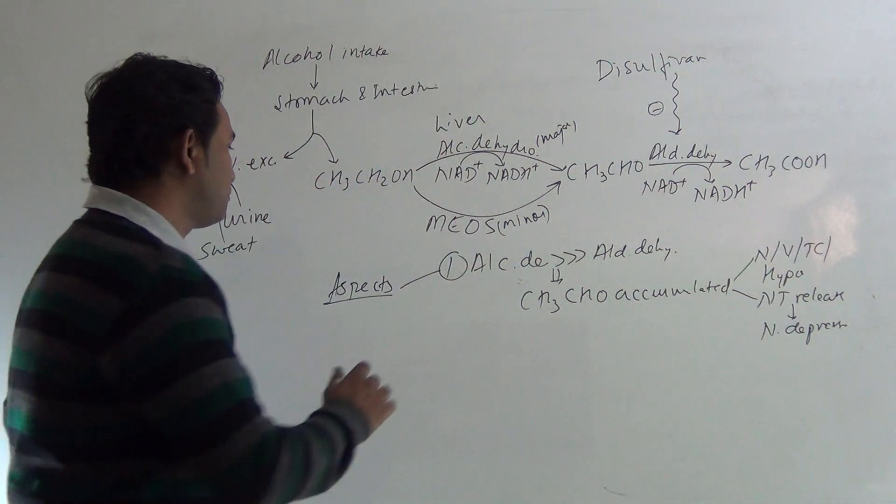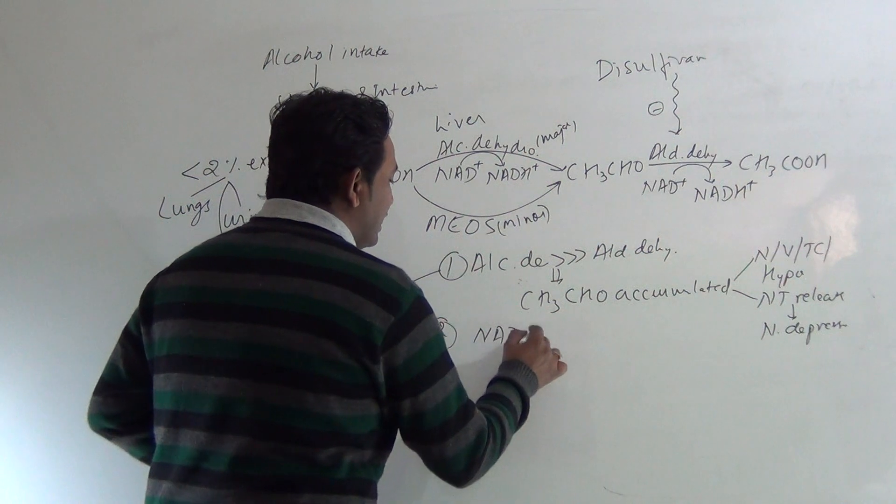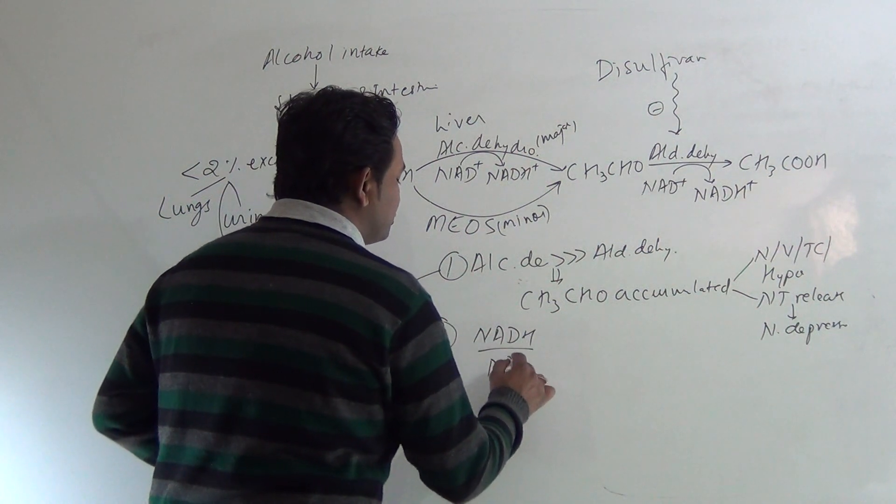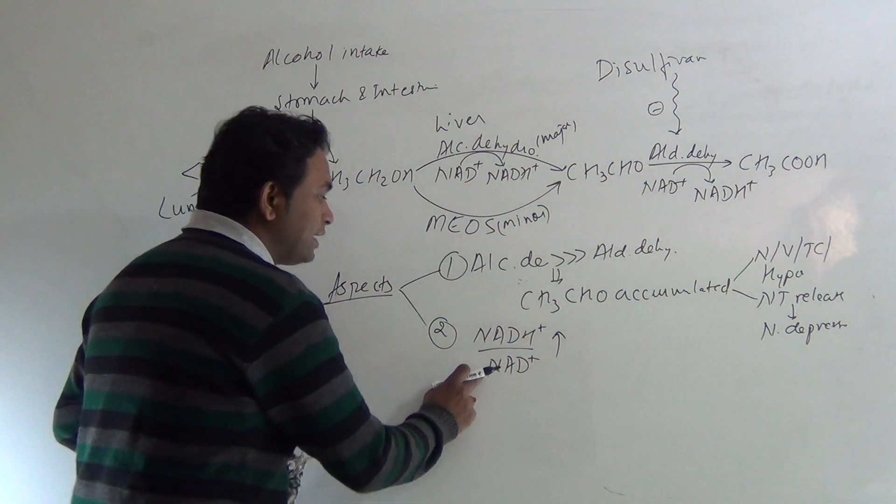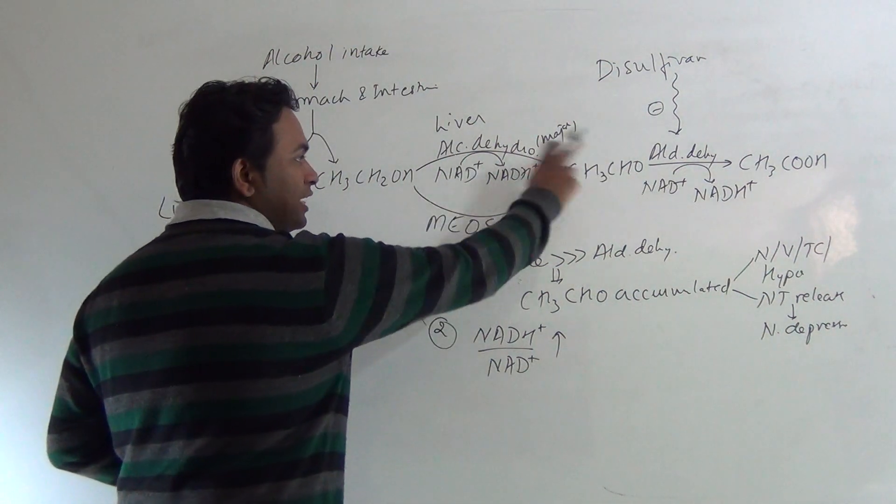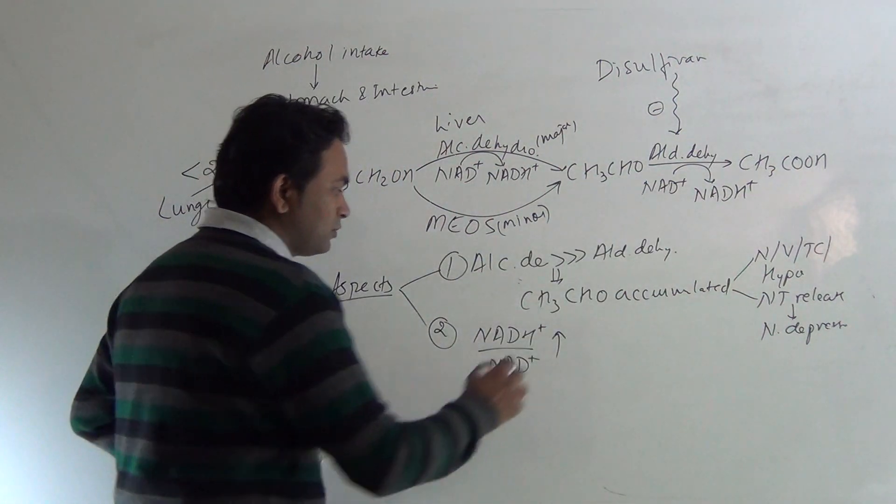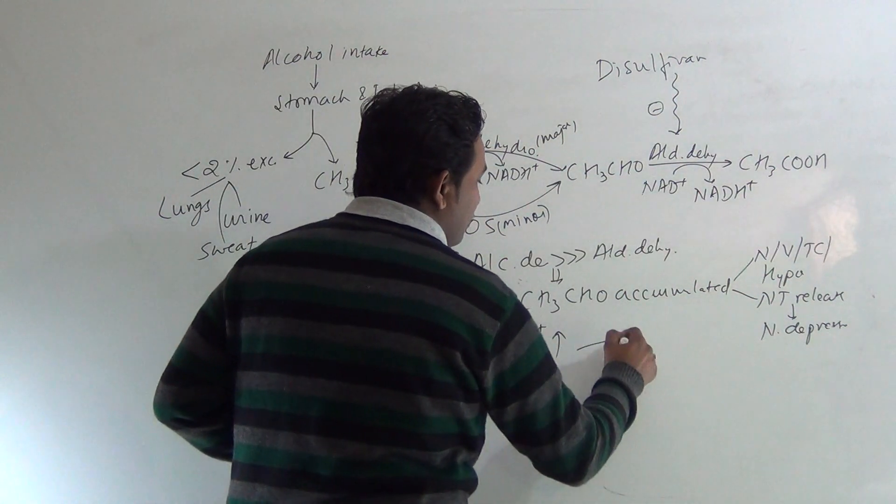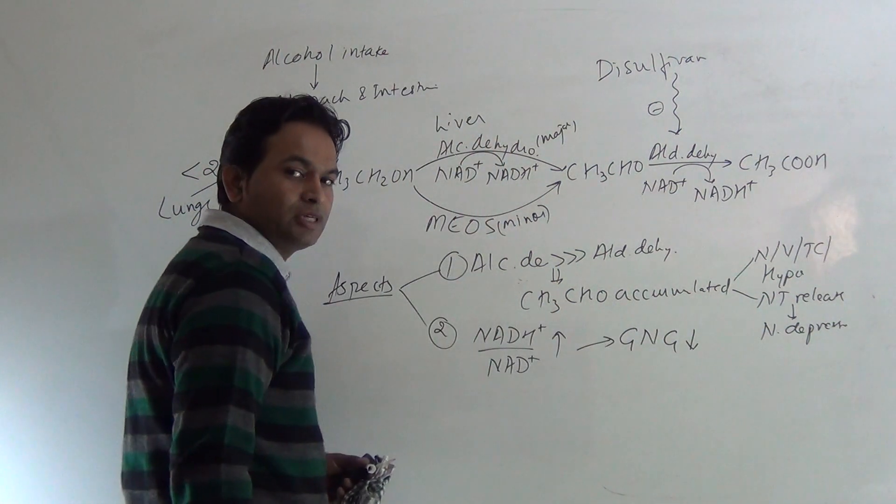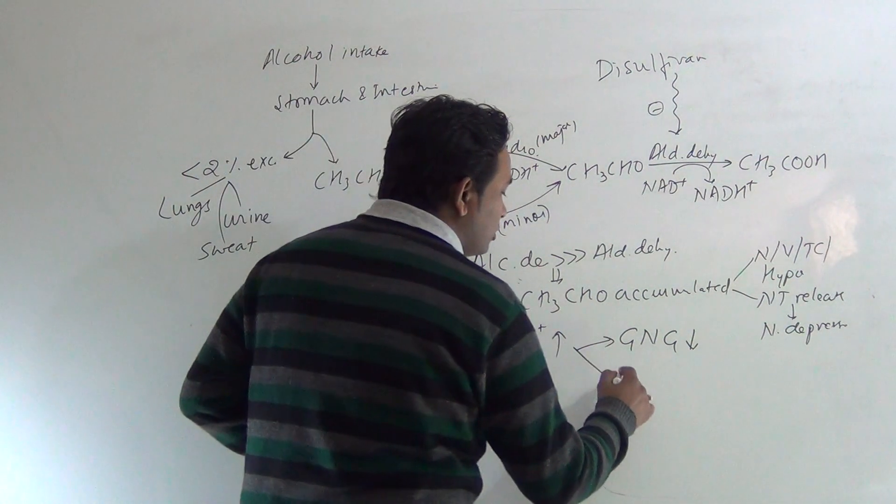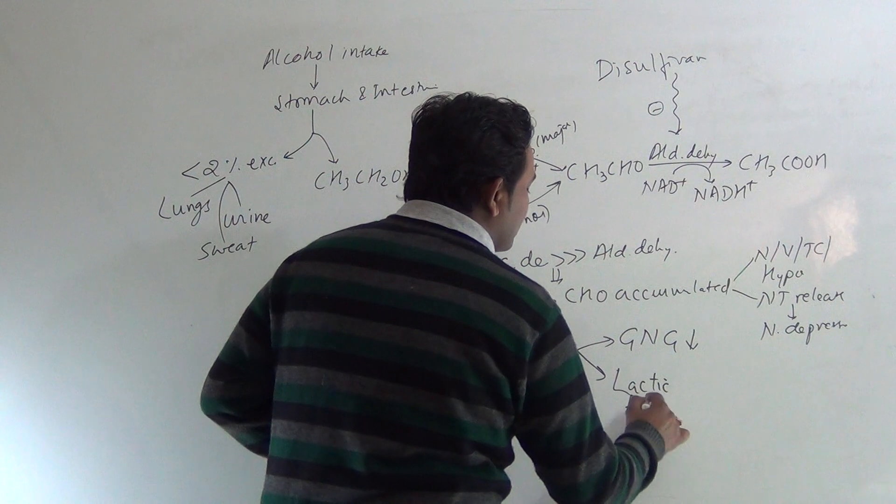Another aspect is that NADH to NAD+ ratio in our body increases. As NAD+ is being consumed in both steps to result in production of NADH in both steps, this ratio increases, which results in decrease in rate of gluconeogenesis, and also lactic acidosis occurs.